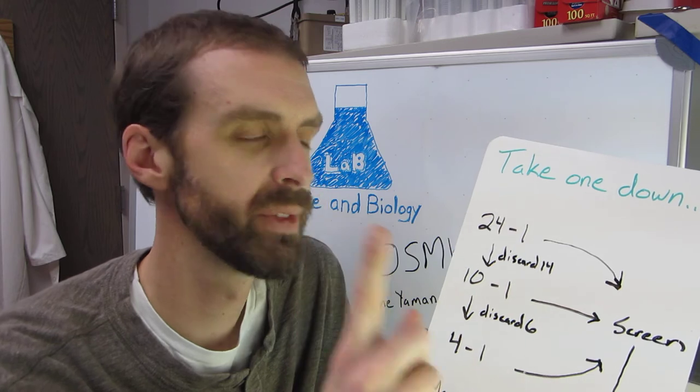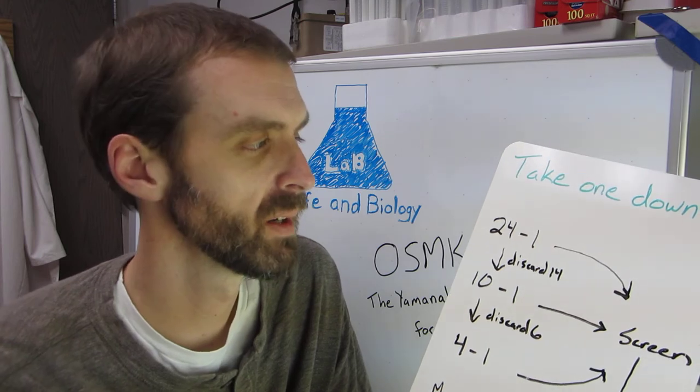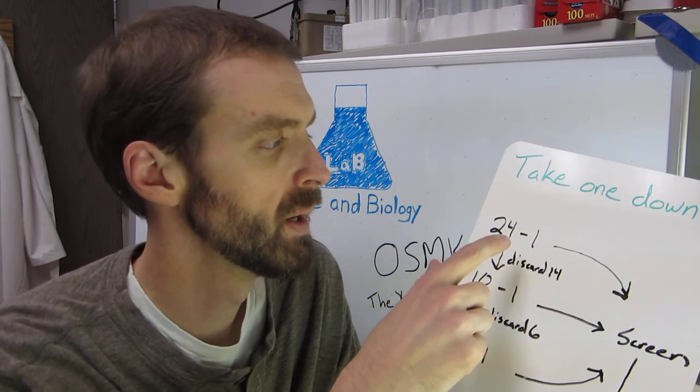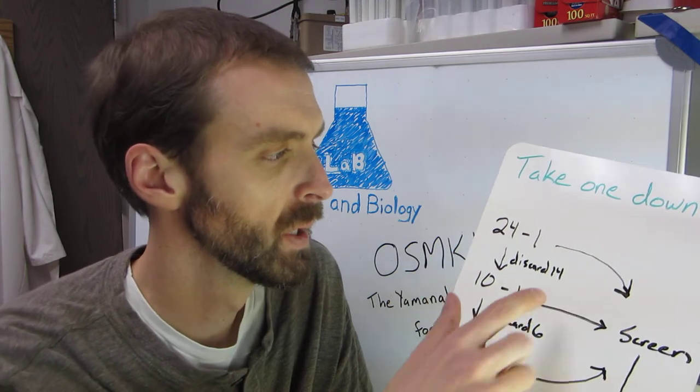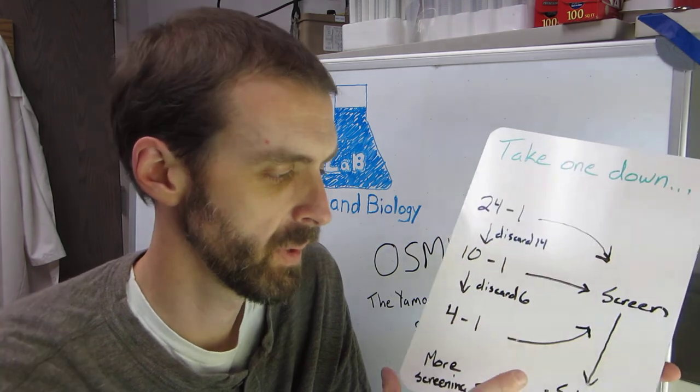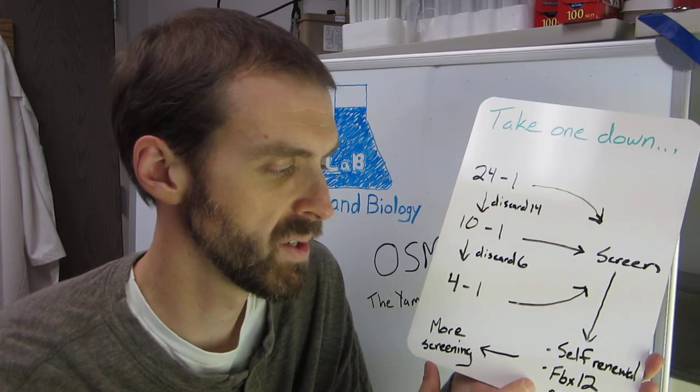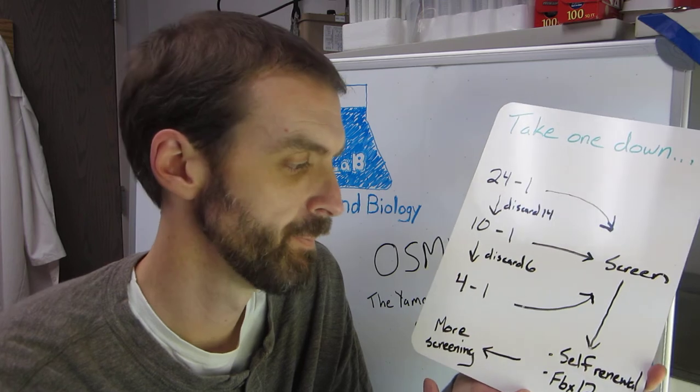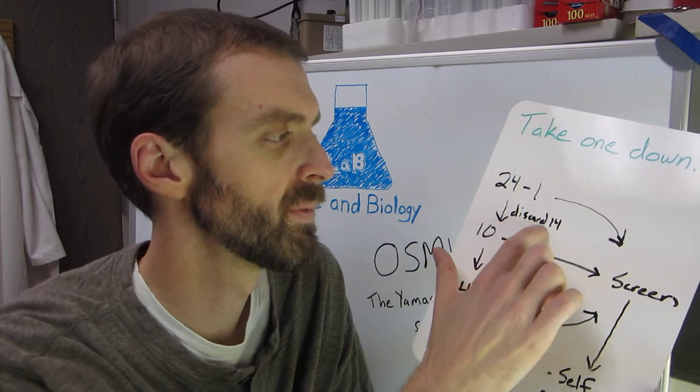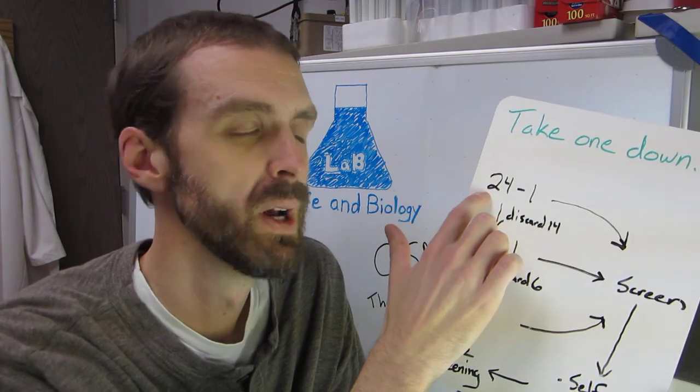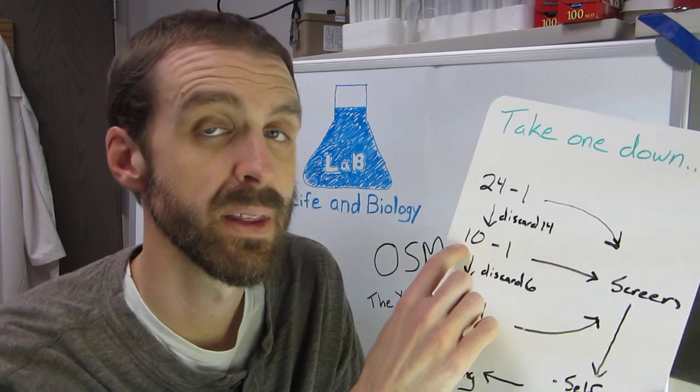where each time you just take out one of the factors. So you start off with A, B, C, D, E, F, G, all the way to whatever 24 is. I guess that would be X. Anyway, then you'd screen them and see if you have cells that are capable of self-renewing and also of turning on a gene called FBX12, which is a gene that's only expressed in embryonic stem cells. So that's their first screen. And they found that 14 of these different original 24 factors or genes that they're introducing were unnecessary. So they got down to 10.